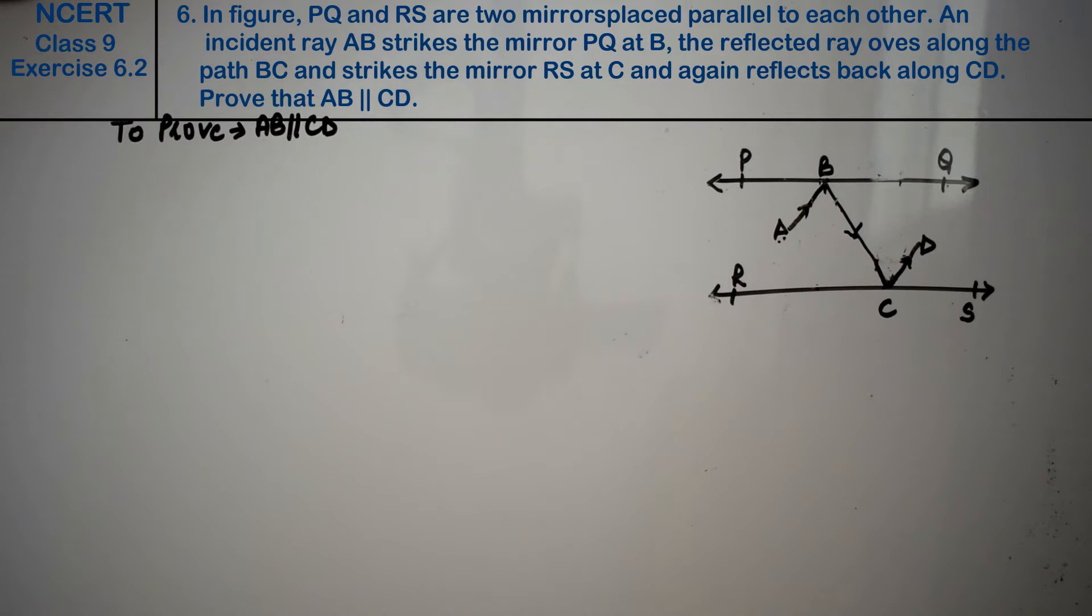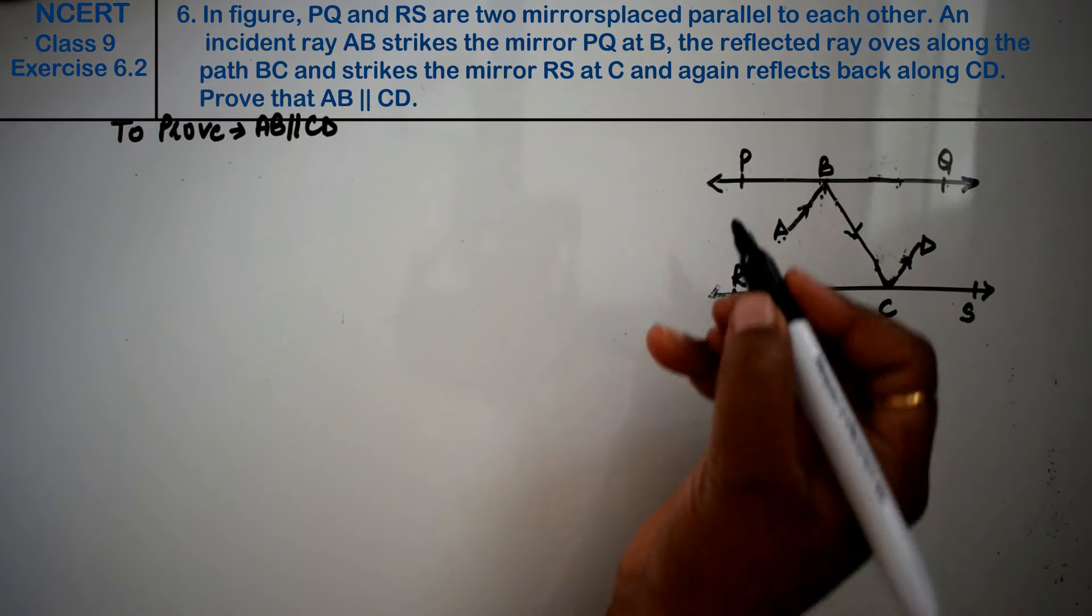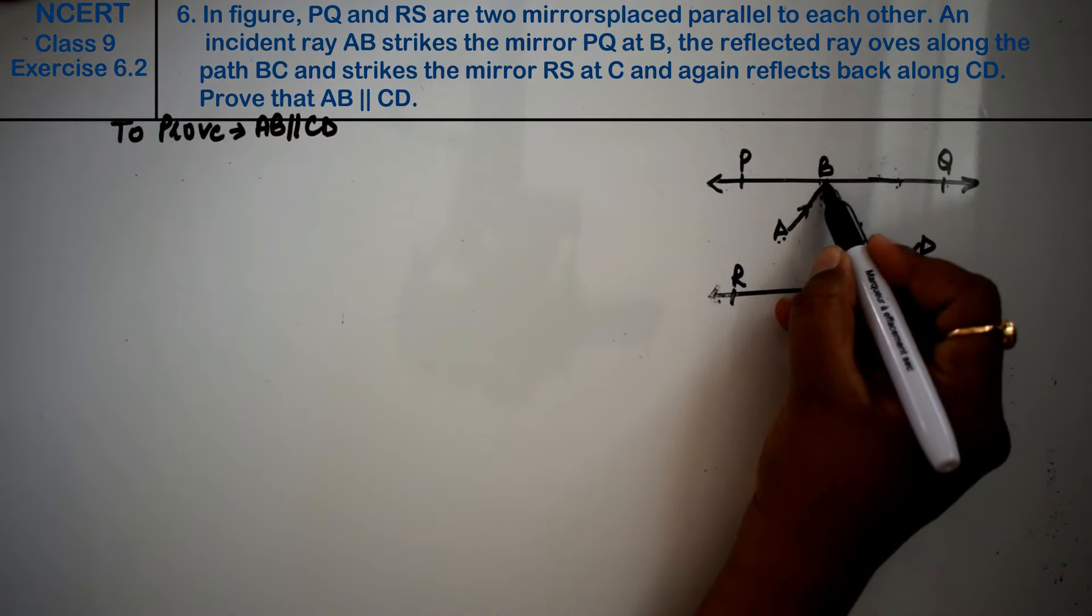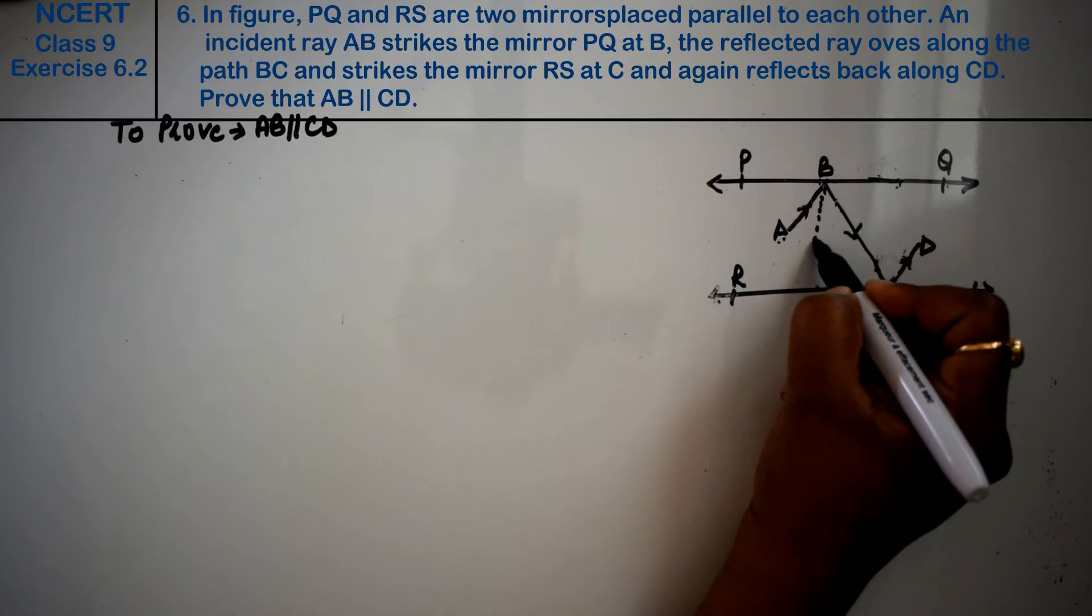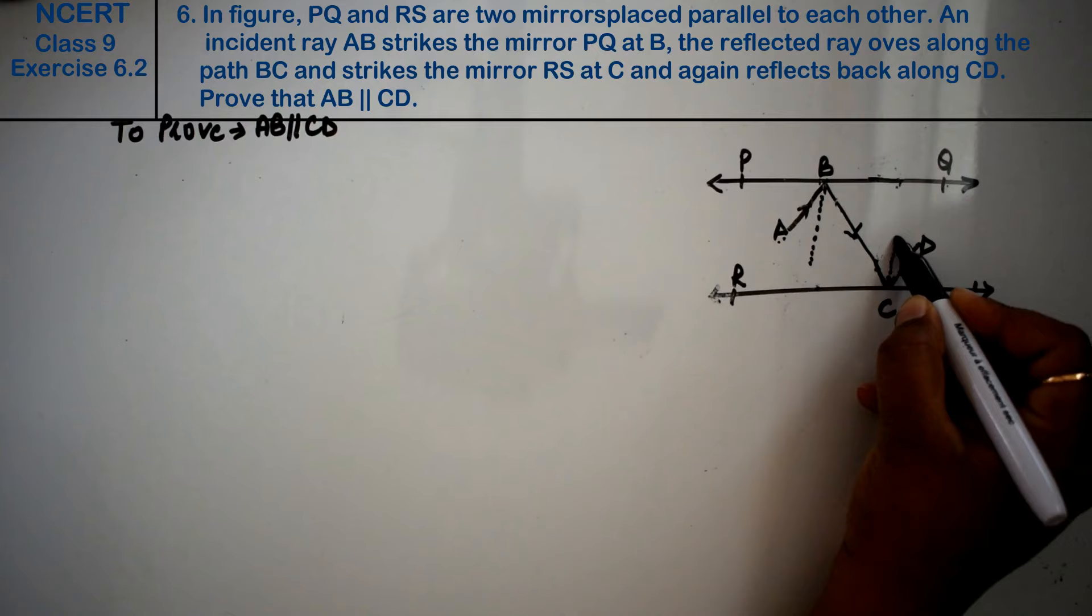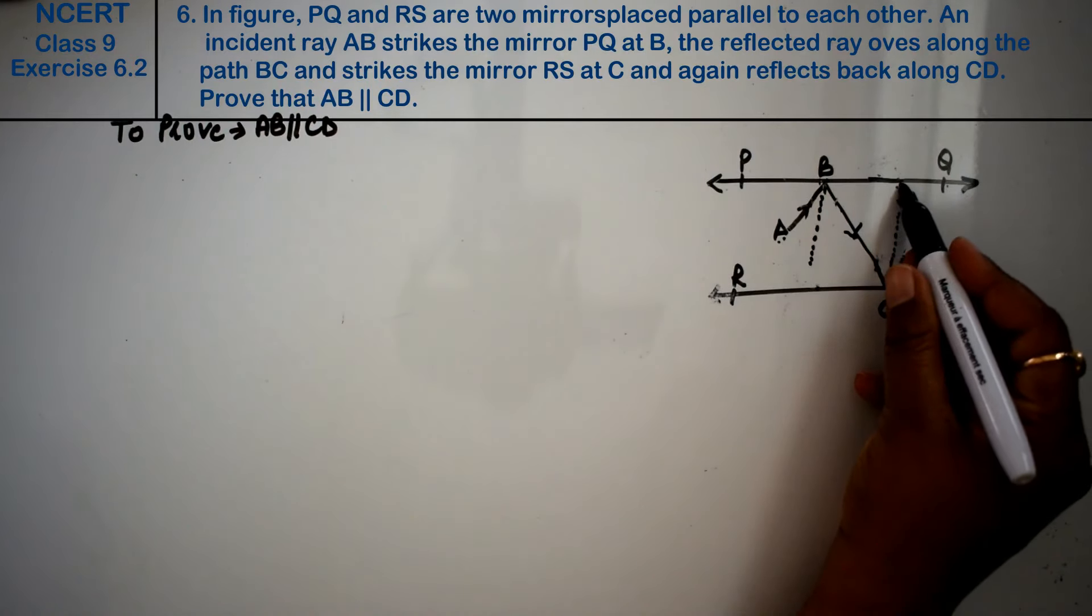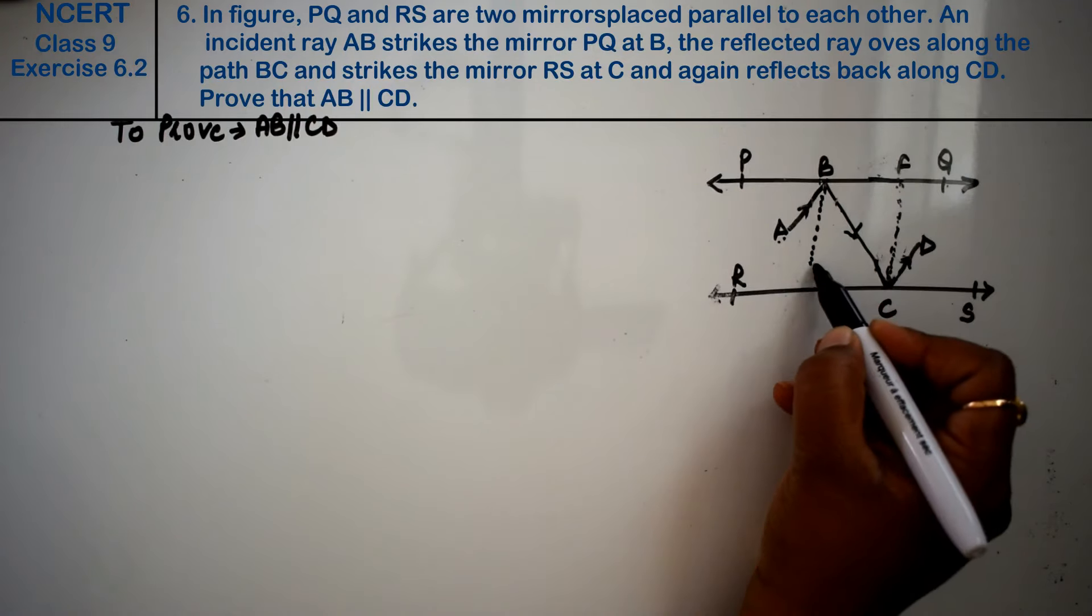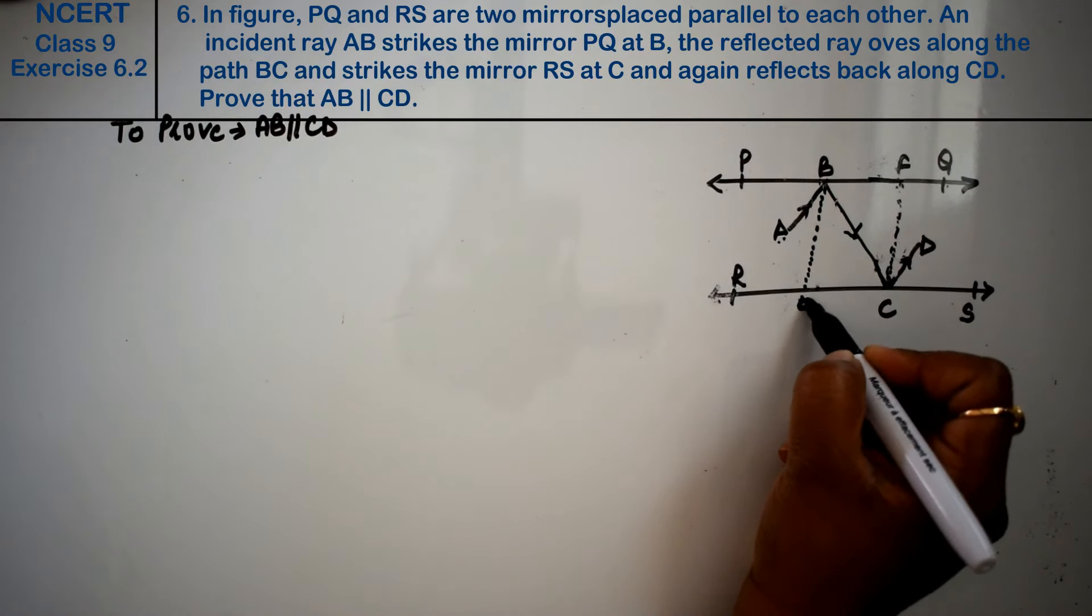Now what do we do? We do construction. BE is perpendicular to PQ and CF is perpendicular to RS. So this is F point and this is E point.